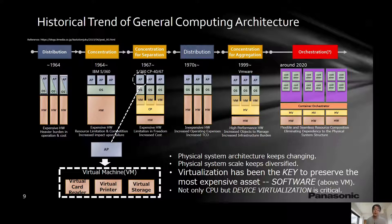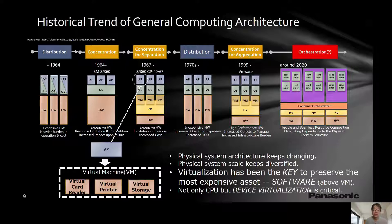In such a variable situation, virtualization has been constantly the key technology to preserve our most expensive asset. The virtualization technology includes both CPU and device virtualization, as shown in the bottom picture. The most expensive asset is, of course, software. For that objective, I would like to stress that device virtualization is critically important, possibly more than CPU virtualization. In automotive computing architecture, device virtualization is similarly important for the same reason. From the next slide, I would like to discuss device virtualization technology specifically in automotive.